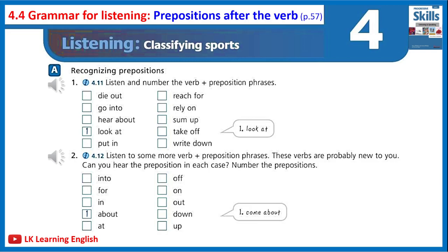Example sentences: 1. Today we're going to look at types of literature. 2. Children must learn to rely on themselves. 3. To sum up the problems. 4. I'm going to mention a few points and I'd like you to write down the most important one in your opinion. 5. First of all, we're going to hear about racing sports. 6. Children should try to reach for a target. 7. I don't want to go into detail here. 8. The spacecraft took off at 10:32am precisely. 9. Remove the old printer cartridge and put in the new one. 10. Traditional festivals are dying out all over the world.